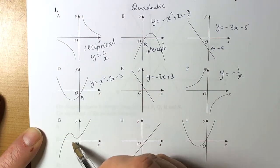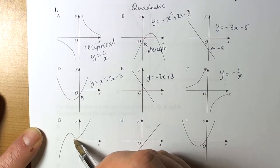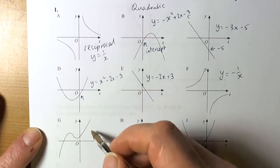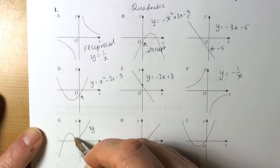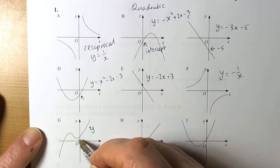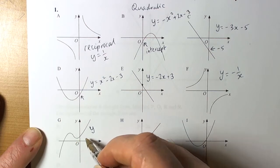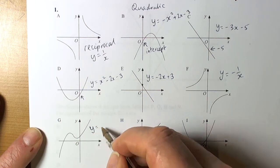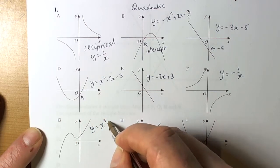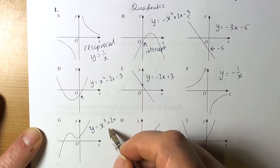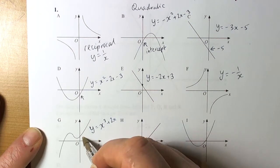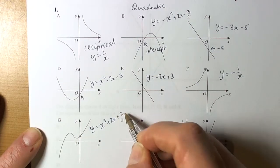This one has got the classic S-shape or elongated S, so it's a cubic type. It's got a kink in the middle, so it's not going to be a straightforward x cubed function — something has happened to it. We'll put some x's there to show it's been modified, and it's got an intercept point of a positive number, so plus 2.